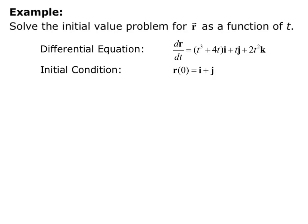This example asks us to solve the initial value problem for r as a function of t. The differential equation given is dr/dt equals the quantity t cubed plus 4t times i, plus t times j, plus 2t squared times k. The initial condition given is r of 0 equals i plus j.